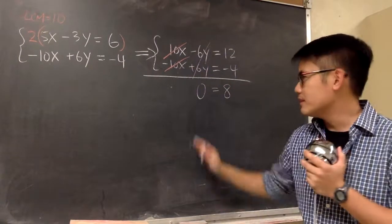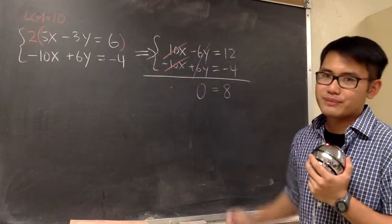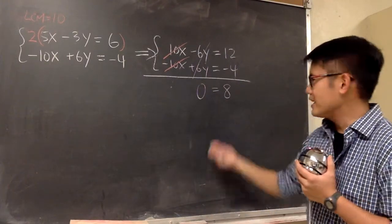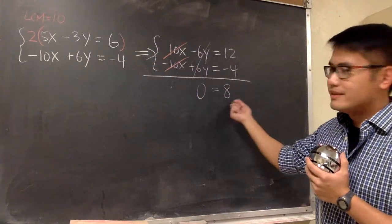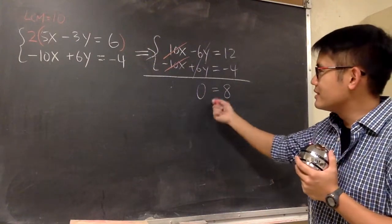And now we have this. 0 is equal to 8. What does this tell us? Where's the x, by the way? Where's the y? This doesn't make sense. 0 is not equal to 8.